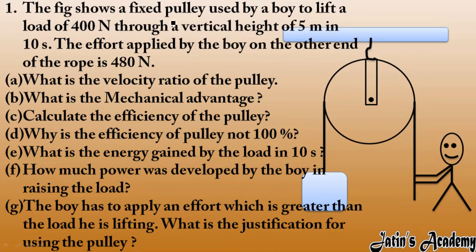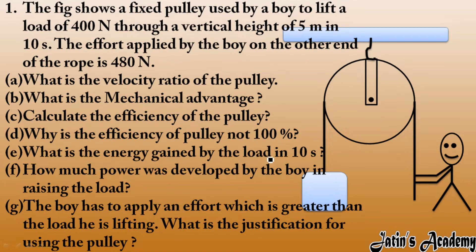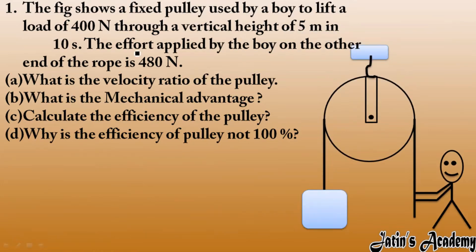First question: A figure shows a fixed pulley used by a boy to lift a load of 400 Newton through a vertical height of 5 meters in 10 seconds. The effort applied by the boy on the other end of the rope is 480 Newton. We have to calculate: the velocity ratio, the mechanical advantage, the efficiency, why efficiency is not 100%, the energy gained by the load in 10 seconds, the power developed by the boy, and the use of the pulley when effort exceeds the load.